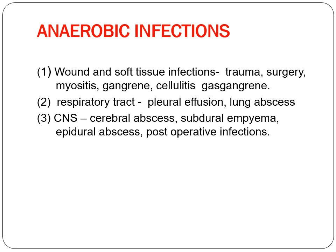Where can we suspect anaerobic infections? We can have wound and soft tissue infections during trauma — when there is muscle laceration or crushing of muscle, these conditions predispose to anaerobic bacterial growth. Surgery and trauma can lead to gas gangrene, cellulitis, respiratory tract infection, pleuropneumonia, and lung abscess. Where there are abscesses and deep-seated infections, there is a very high chance of anaerobic infection.